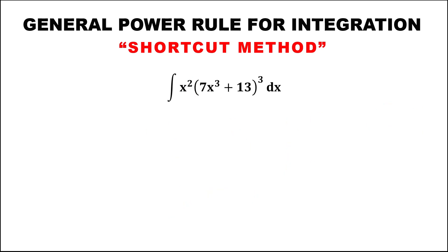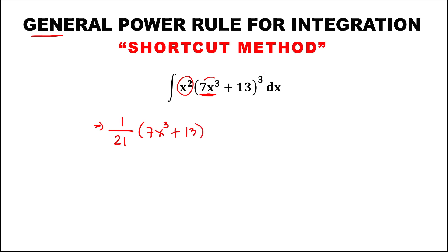For the next given, since this is x to the power 3 inside the parenthesis, therefore there must be x to the power 2 outside the parenthesis so that we can use this general power rule formula for integration. We need to put the constant outside; since there is no given constant, this is 1. Then over the derivative of 7x to the power 3, which is 21 (that's 7 times 3), then times (7x³ + 13) to the power 4, over 4, plus C.